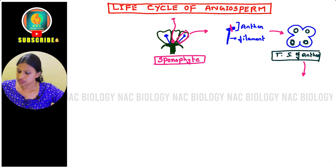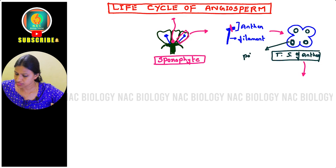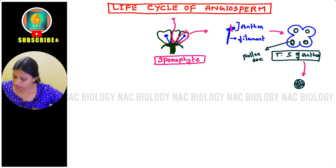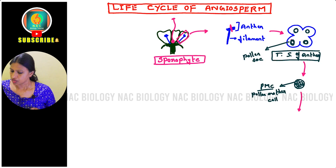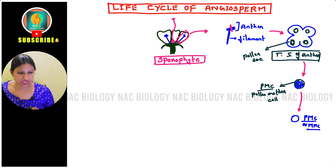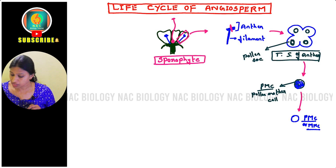Inside this anther there are many pollen sacs. I am taking out one pollen sac — inside it there are many cells called pollen mother cells. I'll color them in blue so you can distinguish them clearly. If I take out one pollen mother cell, also called microspore mother cell — PMC or MMC — this will undergo meiosis because it is a 2n (diploid) cell.